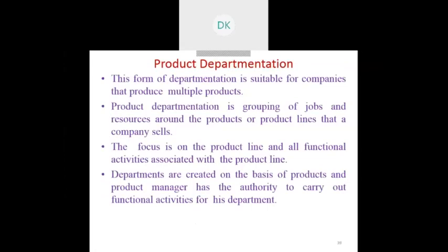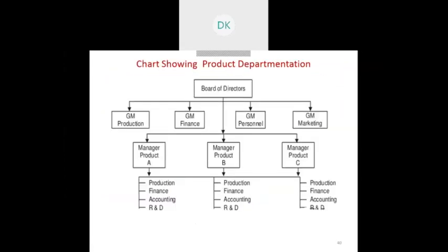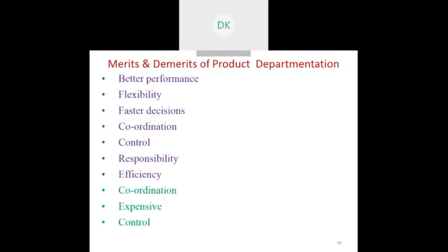Product departmentation is suitable for companies that produce multiple products. It involves grouping of jobs and resources required for different product manufacturing in a company. The chart shows the structure with a board of directors, GM Production, GM Finance, GM Personnel, and GM Marketing, and managers A, B, and C each responsible for a group of similar activities such as production, finance, accounting, and R&D.